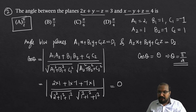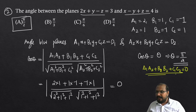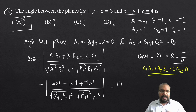The condition for perpendicular planes is: a1·a2 + b1·b2 + c1·c2 = 0. If the planes are perpendicular, this expression equals zero. That concludes the angle between two planes question.